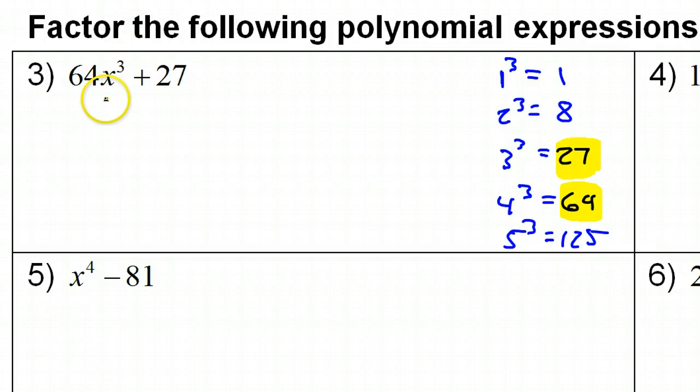Now, we have learned that any time you factor the sum or difference of two cubes, it's always going to factor as a binomial and then a trinomial. So, I'm setting up for a binomial and a trinomial, two terms and three terms.